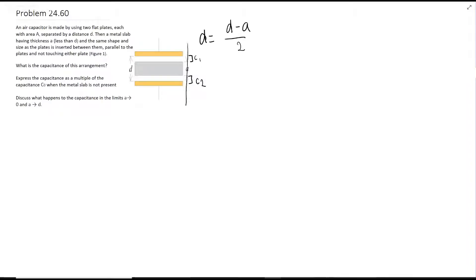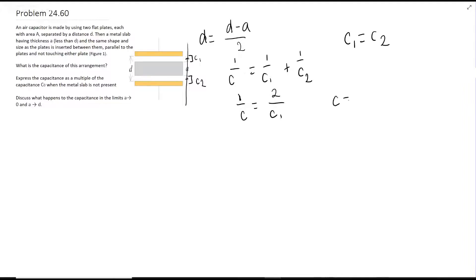So this is basically one capacitor here and one capacitor here, separated by the metal slab — that means they're in series. A capacitor in series has this type of equation. We're trying to find C, and we have C1 and C2, but these are actually the same because there's nothing different about them. So C1 equals C2, which means you can rewrite the series equation, and C equals one-half C1.